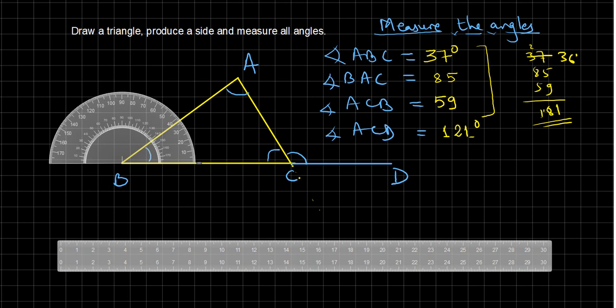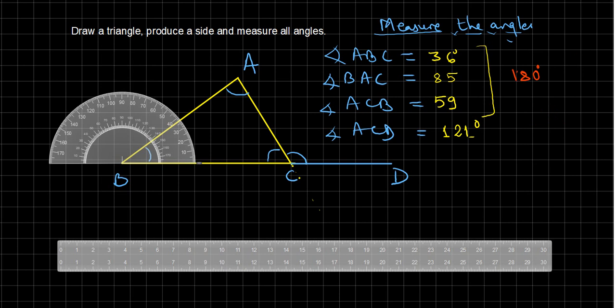One degree difference can occur because there is a difference in scales. After correction, the sum of the angles of the triangle is proved to be 180 degrees. I reduced the error by adjusting one degree. The angles are: angle ABC = 36 degrees, and angle BAC = 85 degrees.